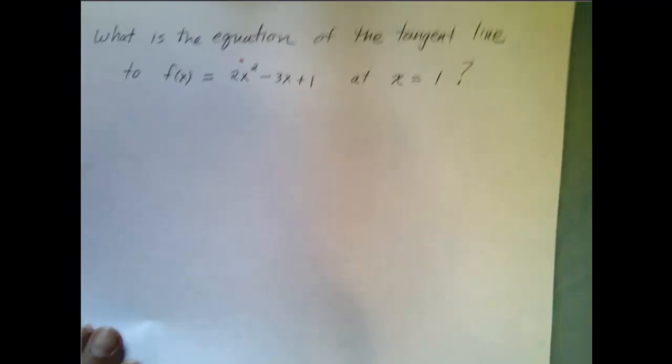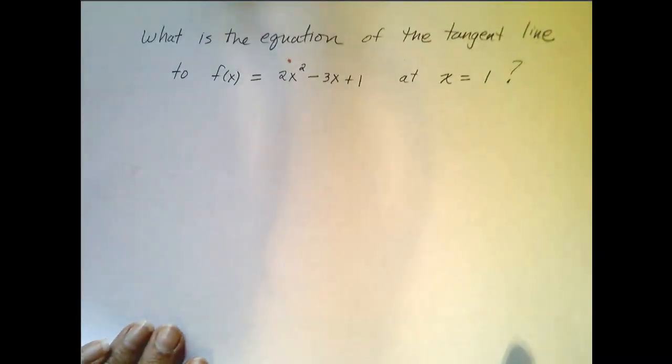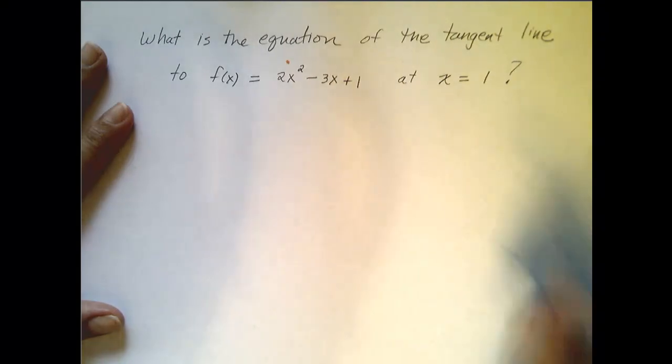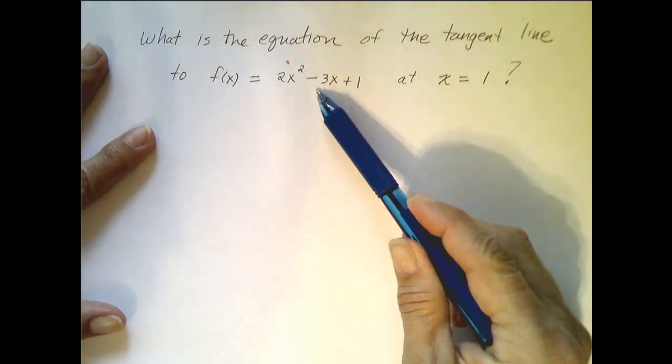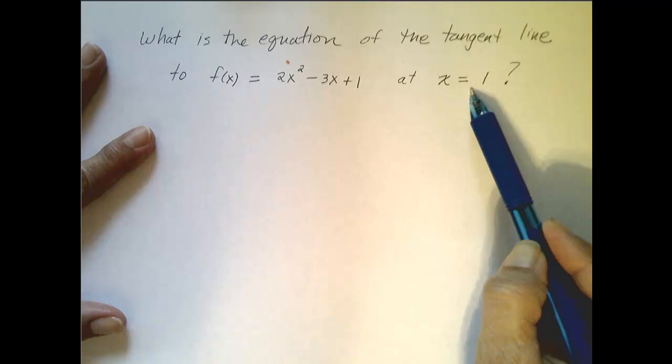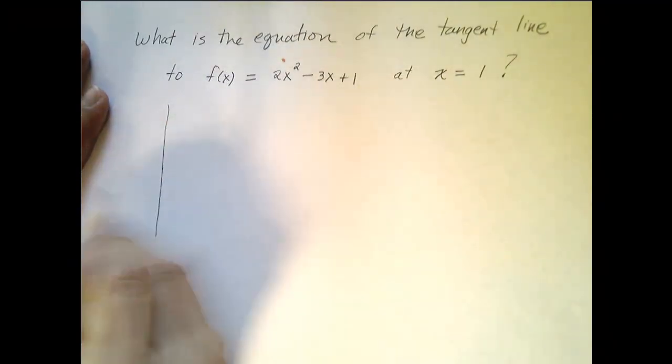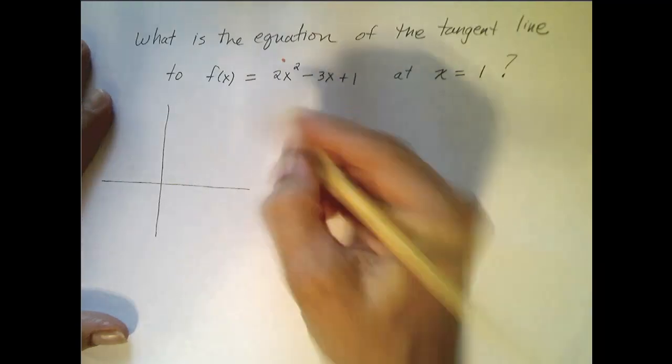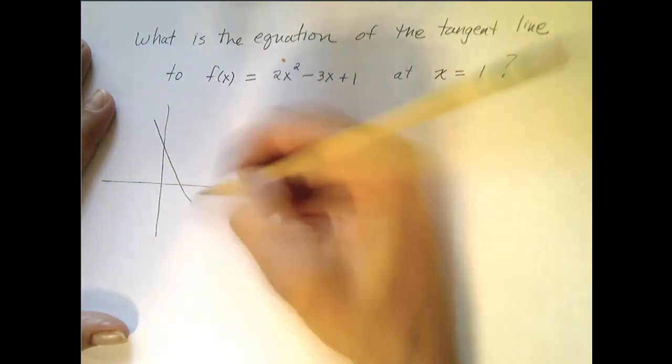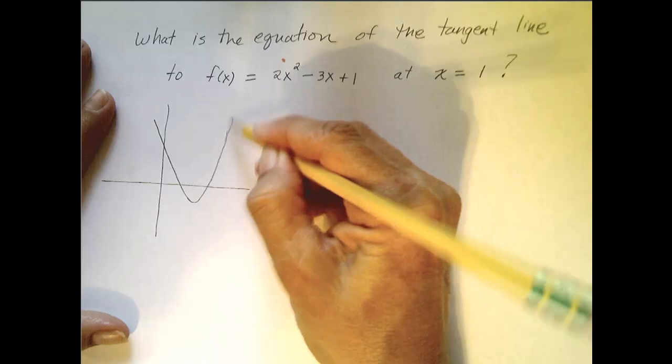Let's apply that to this particular example. What is the equation of the tangent line to this function at this x value? If I were to do just a rough sketch of this function right here, it would look something like that.